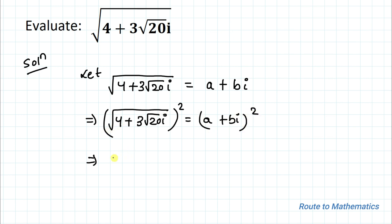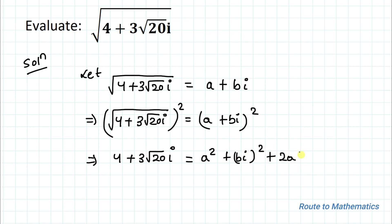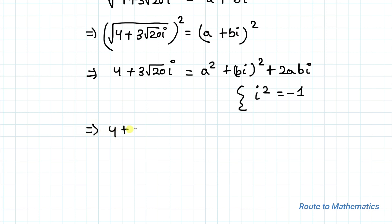After squaring, the square root gets eliminated. So we have 4 + 3√20·i = A² + (Bi)² + 2ABi, applying the algebraic identity (A + B)². We know that i² = -1, so this becomes: 4 + 3√20·i = (A² - B²) + 2ABi.